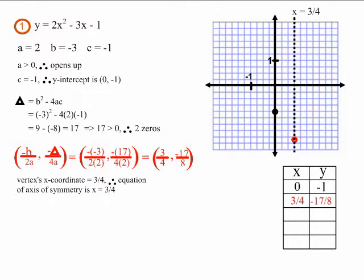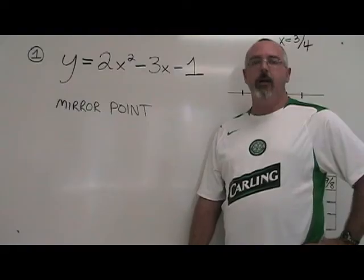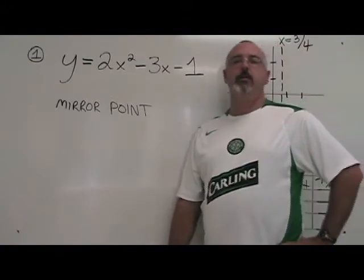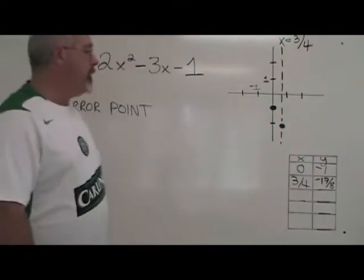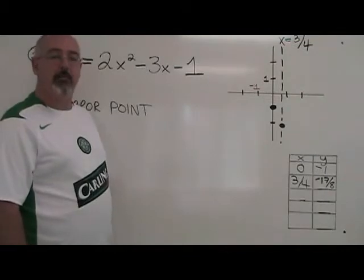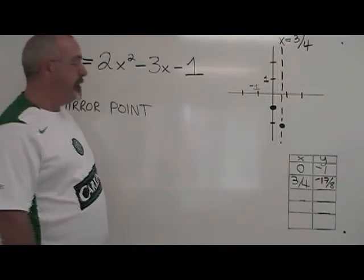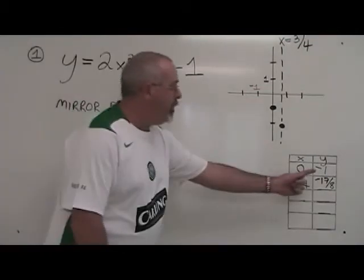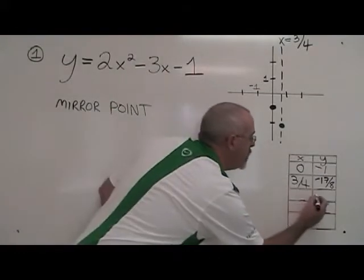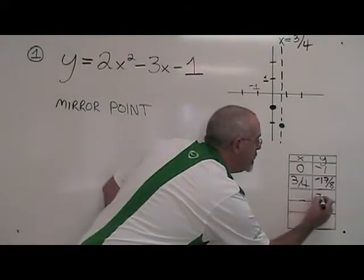This is what example one looks like before we find our mirror point. To find the mirror point — the point symmetrical to the y-intercept — we must know that the y-coordinate of the mirror point will be the same as the y-coordinate of the y-intercept. Our y-intercept's y-coordinate is negative 1, so the mirror point's y-coordinate is negative 1.